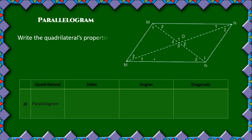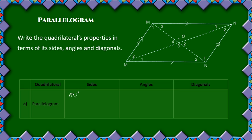Next up we have a parallelogram. Writing its properties, we start off with the sides. With the parallelogram, both pairs of opposite sides are parallel to each other. So we can say MN is parallel to PQ, and MP is parallel to NQ.